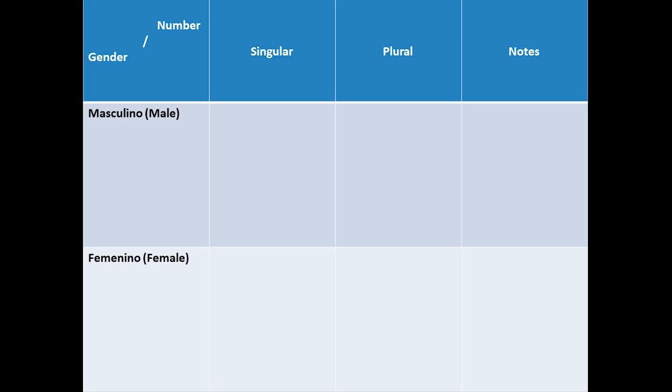Before watching this video, I would recommend you to watch my last video as I explain there the definition of the articles. Now let's start the diagram of the indefinite articles. We will also classify the indefinite articles according to gender and number. This is even easier than the definite articles, so here we go.